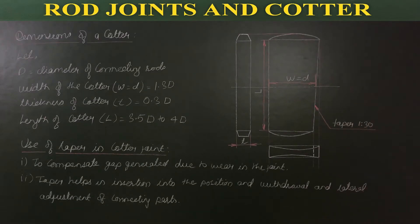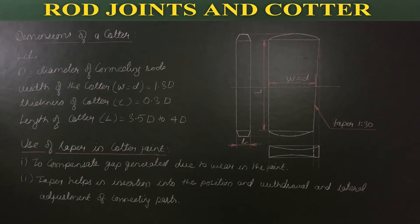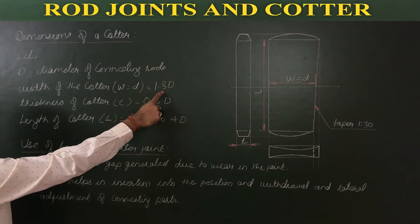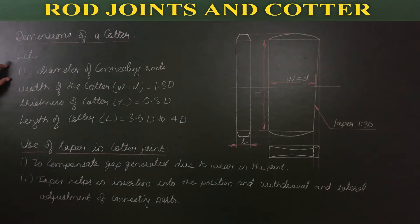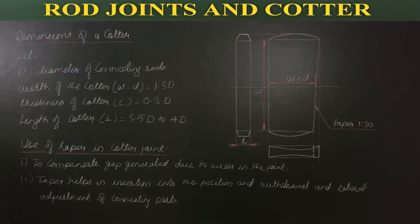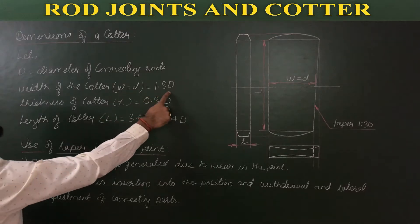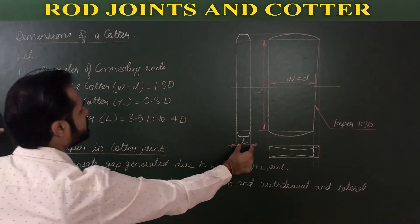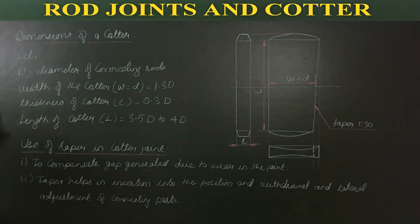The dimensions of a cotter: let capital D be the diameter of the connecting rods. Width of the cotter W equals 1.3D. Thickness of the cotter t equals 0.3D. And length of the cotter L equals 3.5D to 4D. So the three dimensions are width 1.3D, thickness 0.3D, and length 3.5D to 4D.